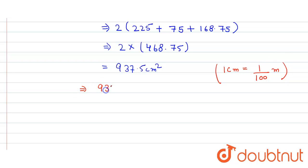This equals 937.5 divided by 100 × 100, which gives us 0.09375 meter square.